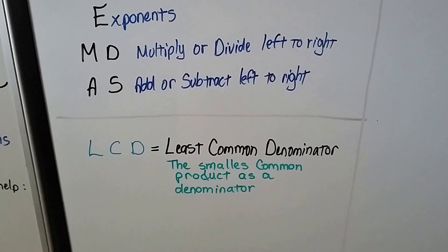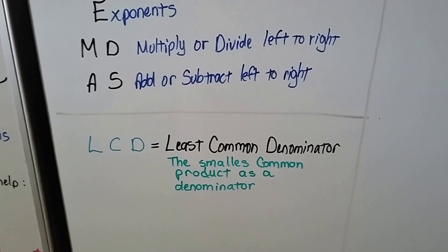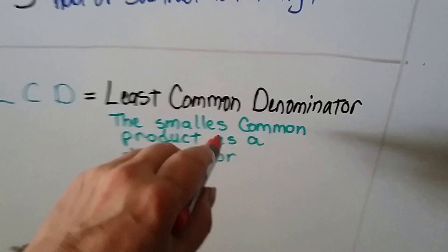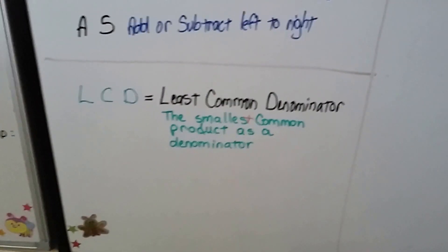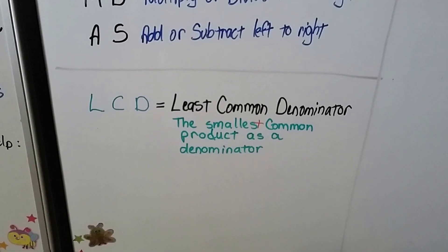And LCD means least common denominator. It's the smallest, whoops I'm missing a T. Here I'm trying to remake a video and I'm still making mistakes. It's the smallest common product as a denominator.